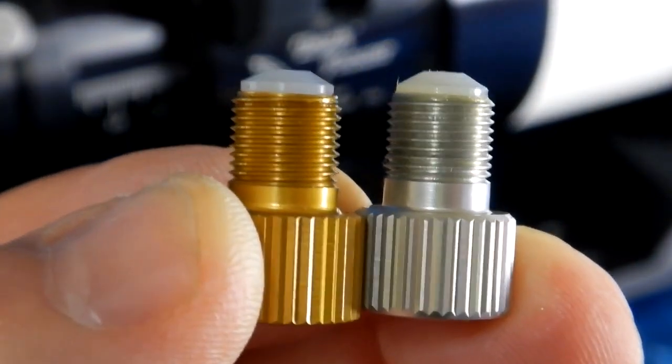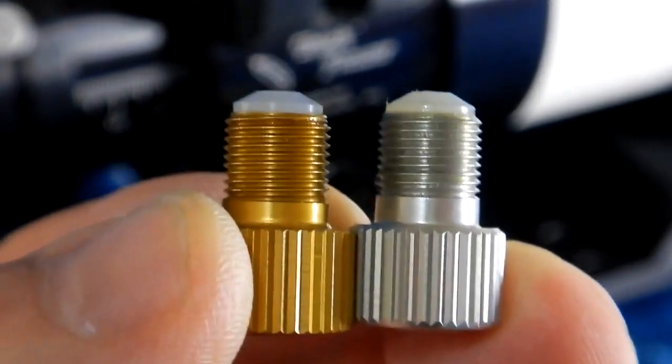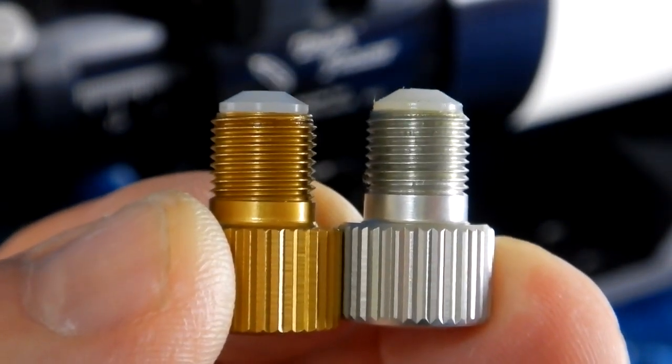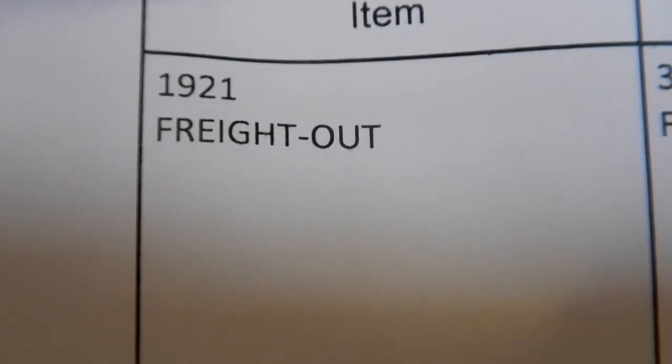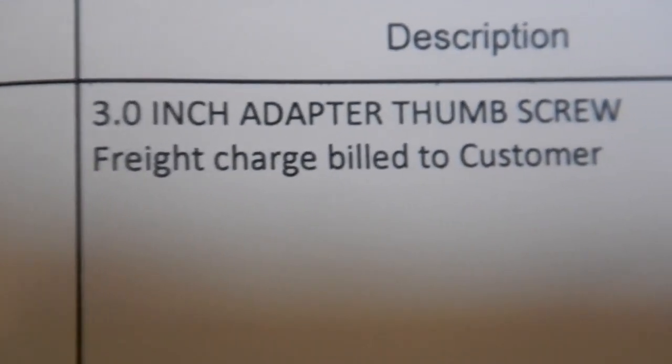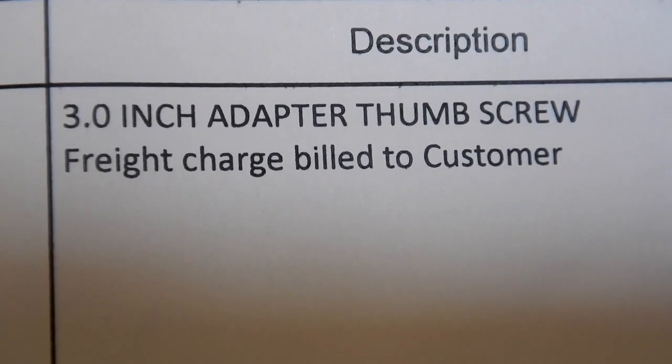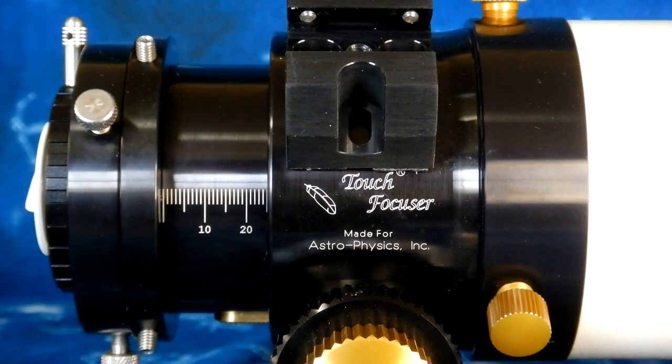As you can see, other than the gold coloring, it's the exact same thing. Here you see the item number, it's a 1921, and it's called their three inch adapter thumb screw. The cost per each was $15, and then there was also a shipping charge.